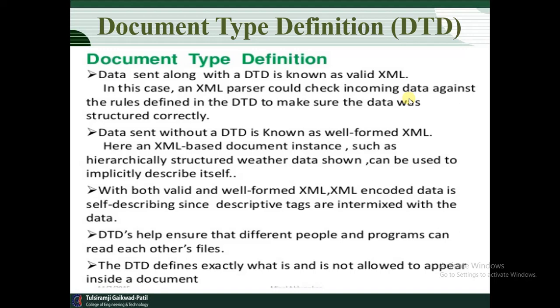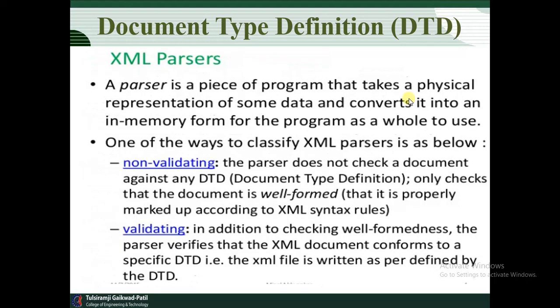DTD is used to describe the data structure more precisely. The XML parser checks the incoming data against the rules defined by the DTD and makes sure it follows that structure. Incoming data sent without a DTD is known as well-formed XML. Both valid and well-formed XML data is self-descriptive since the descriptive tags are mixed with the data. DTD helps ensure that different people and programs can read each other's files and defines exactly what is and is not allowed to appear inside the documents.